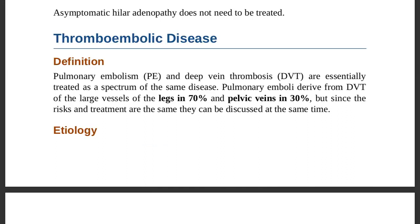Thromboembolic disease: pulmonary embolism and deep vein thrombosis (DVT) are treated as part of the same disease spectrum. Pulmonary emboli arise from DVT of the large vessels of the legs in 70 percent of cases and pelvic veins in 30 percent. Since risk and treatment are the same, they can be discussed together.